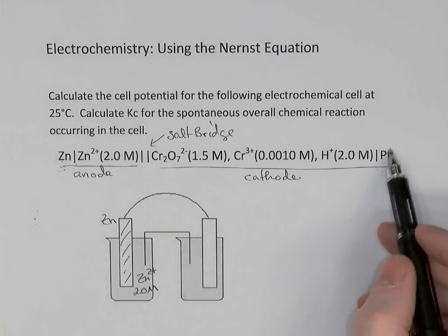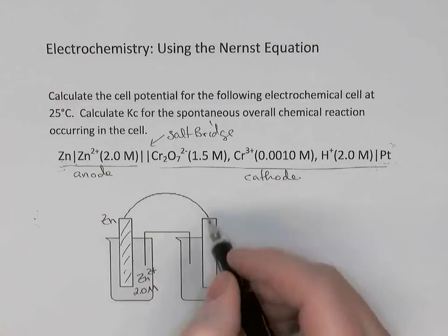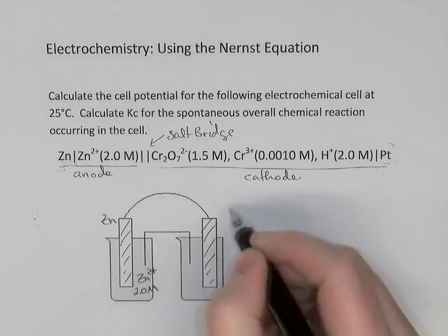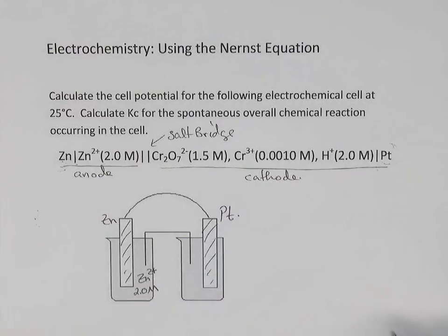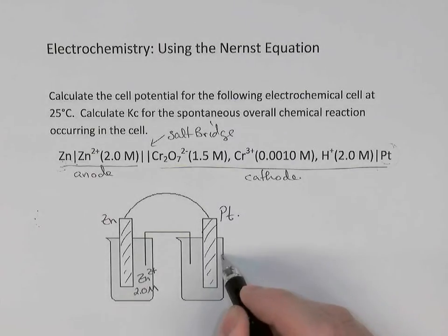On the right, we have a piece of platinum metal, Pt serving as our electrode here. So that's platinum metal. And it's immersed in a solution. It's going to get a bit crowded, so I'm going to write it on the side. In this beaker, in the solution, there is dichromate,